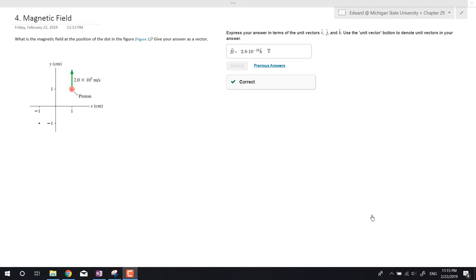So question number four, it gives us a picture of a proton. It's asking us what is the magnetic field at the position of the dot over at negative one and negative one. And wants the answer as a vector.